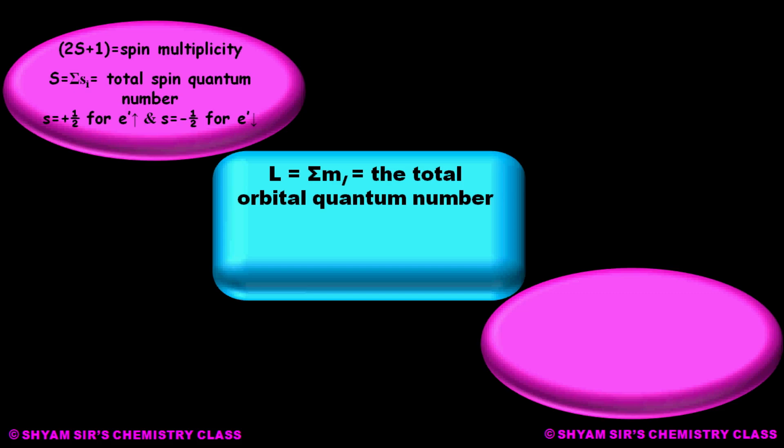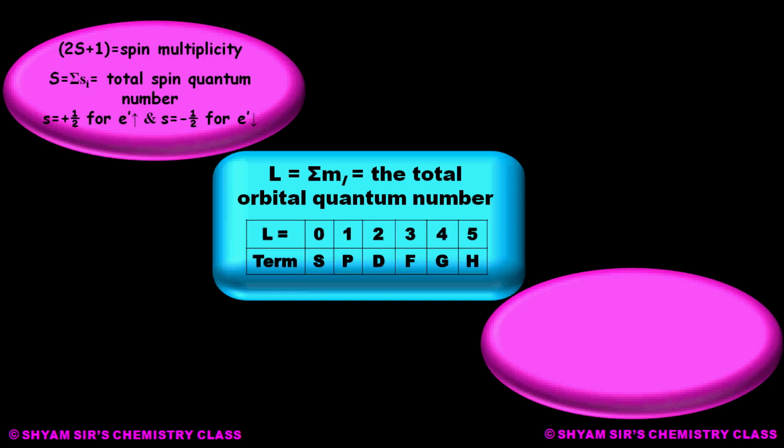Now, what is L? L is the summation of m_l values — that is, the total orbital quantum number represented by L. For certain values of L, there will be different symbols. For L equal to 0, 1, 2, 3, 4, 5, the terms or symbols are represented as S, P, D, F, G, H respectively. So for L equal to 0 the term is S, for L equal to 1 the term is P, and so on.